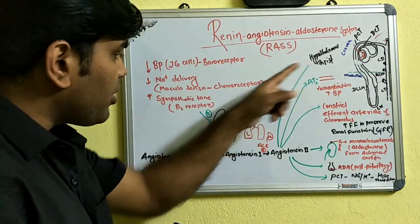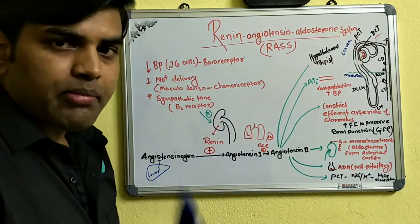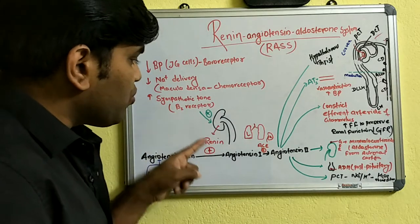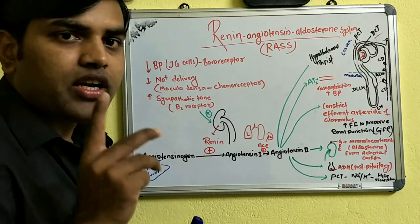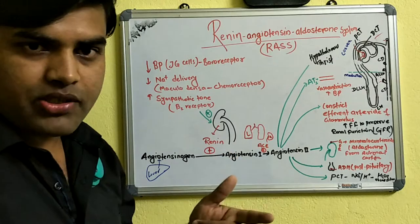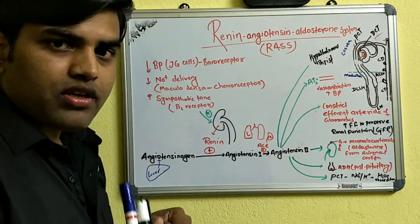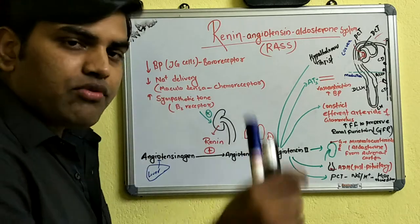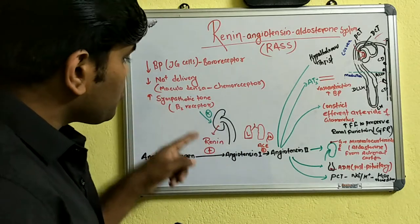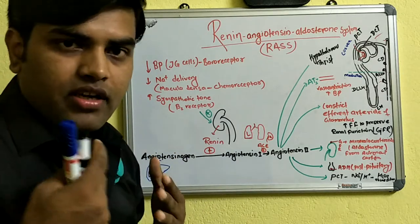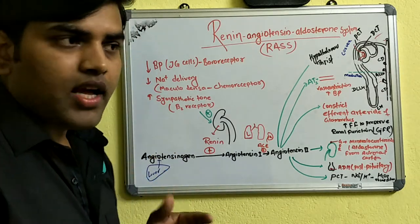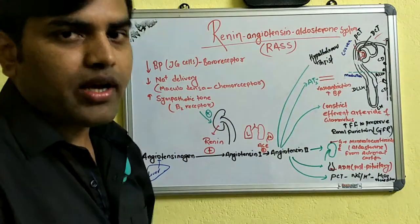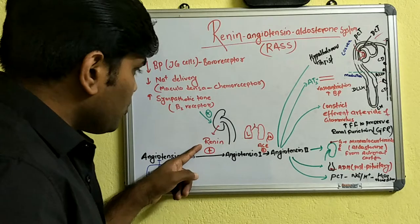The third stimulus is sympathetic tone. There is a beta-1 receptor in the JG cell and the juxtaglomerular apparatus. The sympathetic system acts via beta and alpha receptors, so stimulating the beta-1 receptor causes renin to be released. In summary, the three conditions that stimulate renin release are: (1) decreased blood pressure sensed by baroreceptors in JG cells, (2) the macula densa chemoreceptor sensing decreased sodium delivery, and (3) sympathetic outflow acting through the beta-1 receptor.